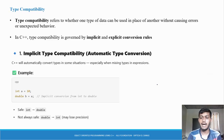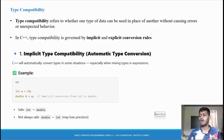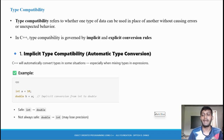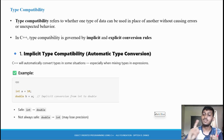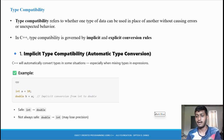This is type casting. Now let's understand type compatibility. Compatibility means — assume there is a software company with AC installed everywhere. All employees work comfortably with the AC. The CEO decides to remove the AC and install fans. The CEO checks whether the employees are compatible with the fans — he removes the AC, installs fans, checks compatibility, and the work continues properly without any problem. This is compatibility.